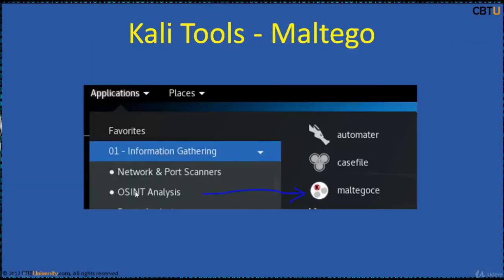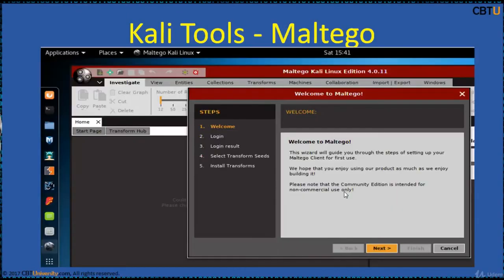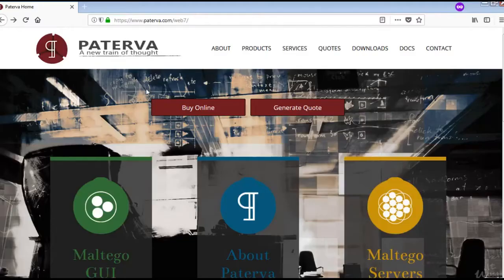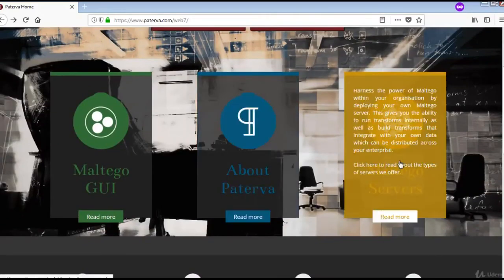Maltego Community Edition is part of Kali Tools. Under the information category, OSINT Analysis, click on Maltego CE to open Maltego Community Edition. Create your account and configure the Maltego client. Please note that Maltego CE is for non-commercial use only. If you do not want to use the Kali Linux Kali tools, you can install it separately. Installation of Maltego CE is easy and quick. It uses Java and runs on Windows, Mac, and Linux. Minimum hardware specifications are 2GB RAM, multicore processor, 4GB disk space, internet access, and the required ports to be opened.